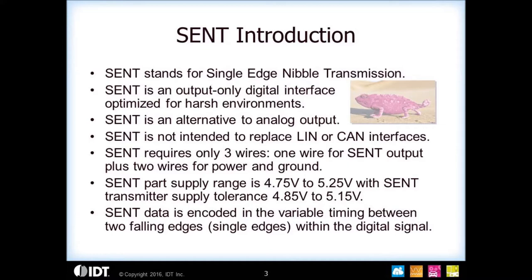Just like an analog output in a sensor module, you typically only need three wires: the SENT output, power, and ground. There is one restriction on SENT — the power supply needs to be from 4.75 to 5.25 volts. The encoding scheme is variable timing between two falling edges, and we'll talk more about that in later slides.